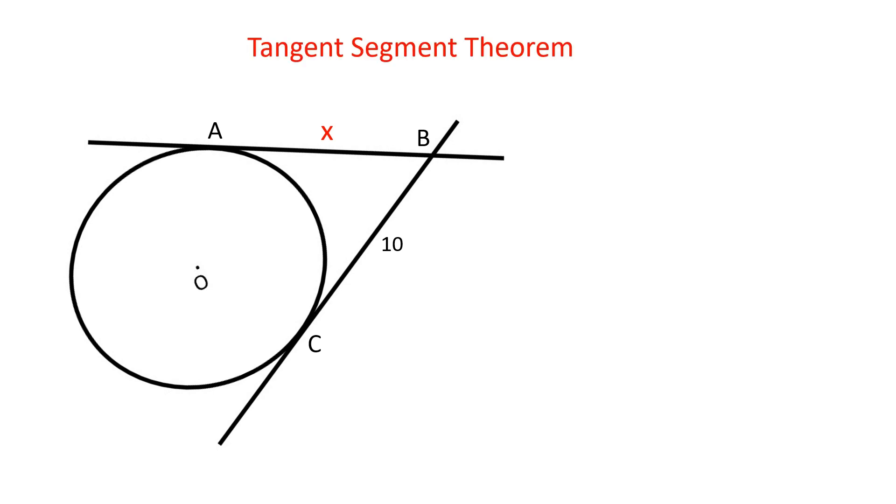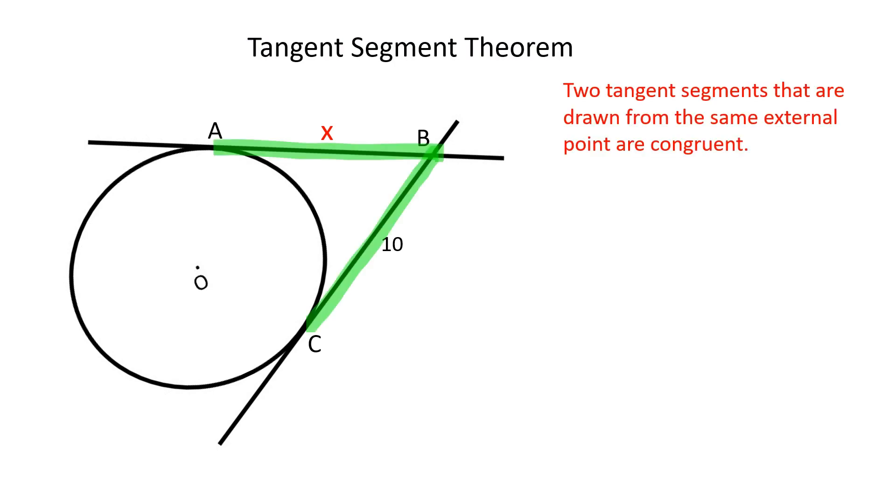According to the tangent segment theorem, two tangent segments that are drawn from the same external point are congruent. AB is equal to BC and equals to 10.